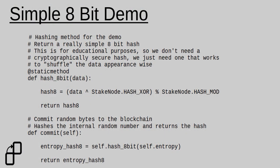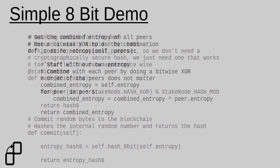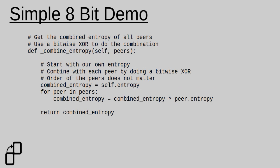Once we have all the revealed entropy and we've validated that the commits match, we can use some simple mechanism to combine the entropy together. In this case, all I'm doing is using a simple bitwise XOR. Now we have a random number to pick our winner with.